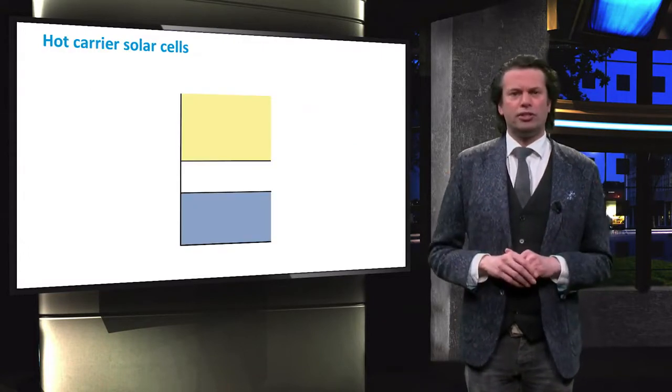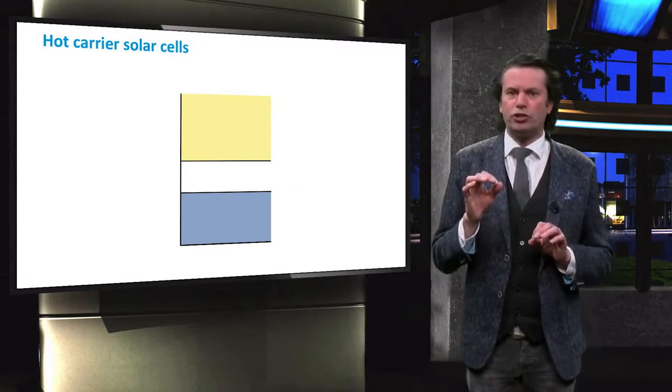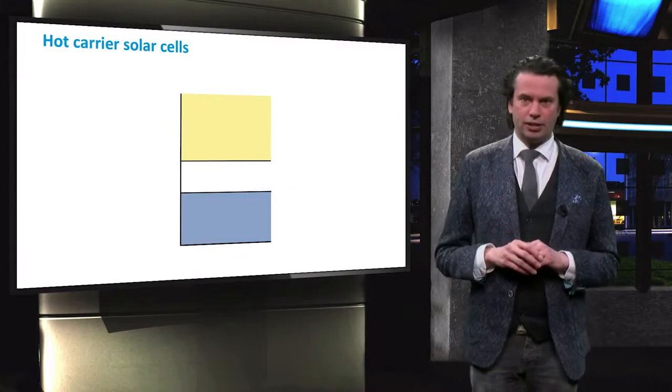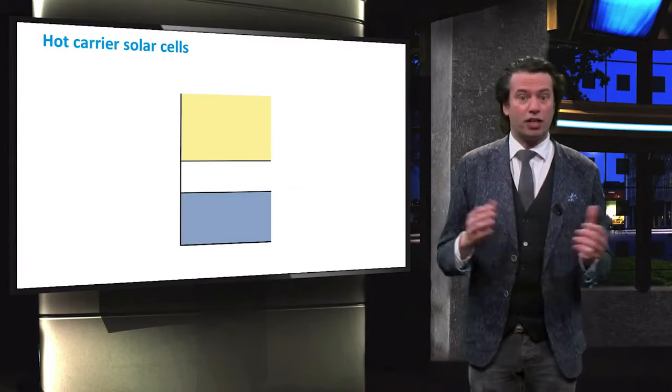In hot carrier solar cells, this is attempted by collecting high energy electron hole pairs just after light excitation and before they have the chance to relax back to the edges of the electronic bands.